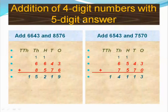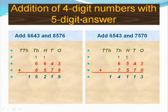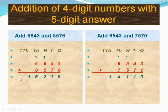Next, addition of 4-digit numbers with a 5-digit answer. For example, add 6,643 and 8,576. In the question, there are only 4 digits, but in the answer there are 5 digits. First, write the numbers one below the other: 6,643 plus 8,576. We add the ones, tens, hundreds, thousands, and ten-thousands place digits. The answer equals 15,290.